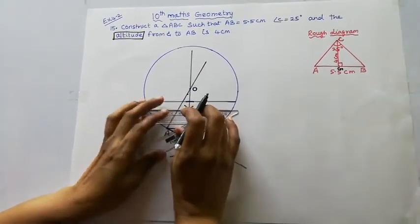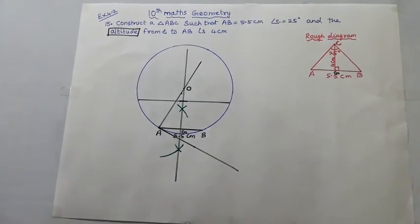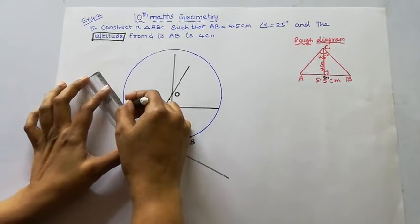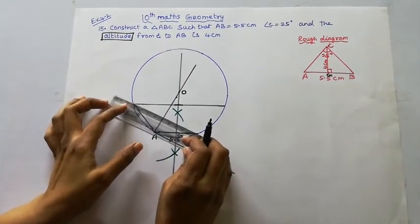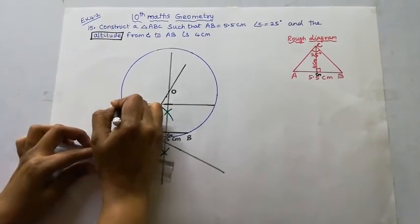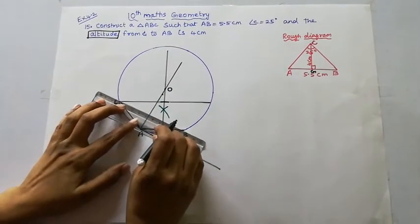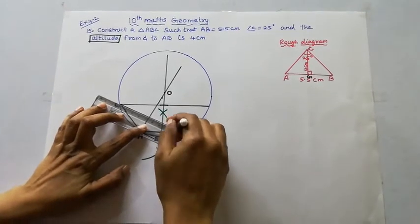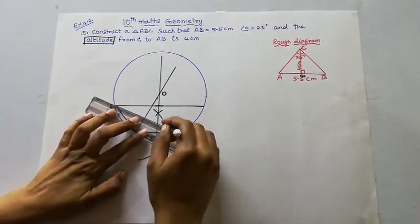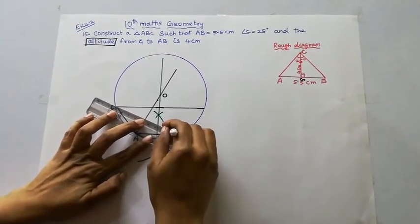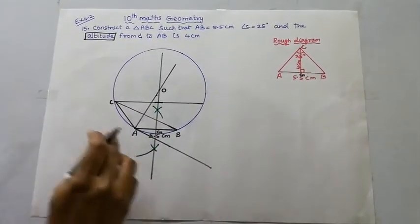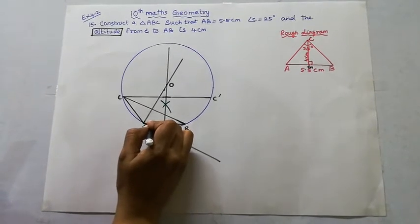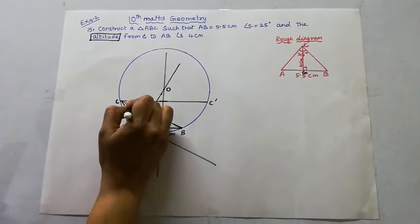This line is parallel. From C, draw the construction line down to AB. Join the points to form the triangle — and C-dash is marked. Now check the angle: angle C should equal 25 degrees. Verify that the angle is 25 degrees.